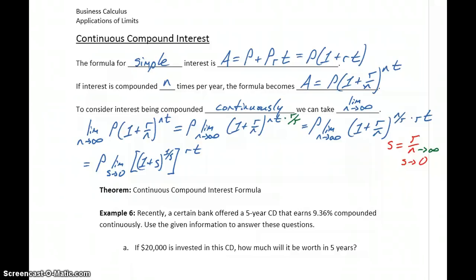So what we end up with in this last step is this interior part of this expression being the precise definition for the value e. So e is a constant that you've most likely seen in other courses. It's approximately 2.78, etc. But this limit expression is the precise definition for that value.